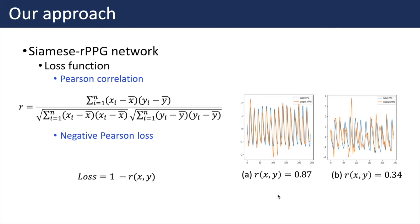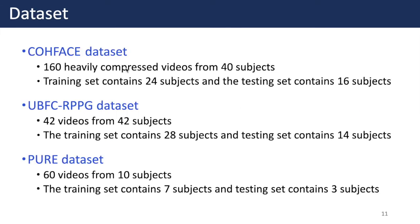I'm Yunyun Zhou and I will present the following sections. We introduce three benchmark datasets: ColdFace, UBFC-RPPG, and Pure dataset. ColdFace dataset contains 160 heavily compressed videos from 40 subjects, with each subject contributing 4 videos of 1-minute length. The training set contains 28 subjects and the testing set contains 14 subjects. Pure dataset contains 60 videos from 10 subjects, where each subject performs different head motions in front of the camera, like sitting still, talking, slowly moving, and rotating the head.